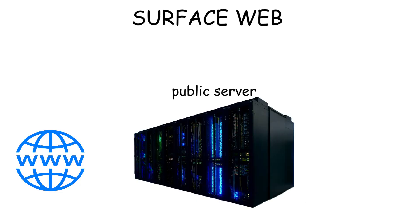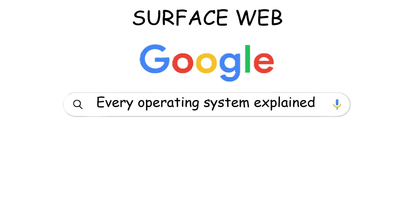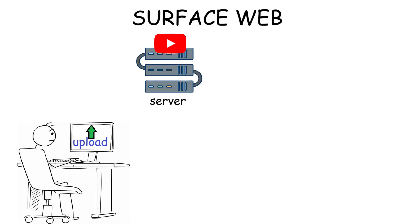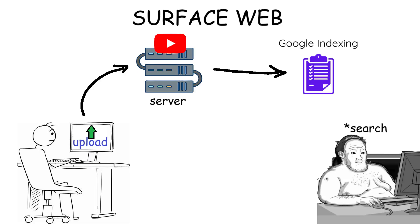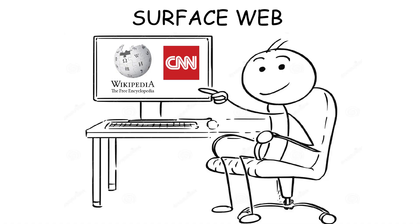This works because web pages are stored on public servers and then indexed by search engine bots. For example, if you search 'every operating system explained' on Google, you might find a video there even if you're not on YouTube. That is possible because the video was stored on YouTube's public server when uploaded, and then indexed by Google. So when anyone searches for it, Google can instantly show the video since it's not restricted by a password — it's meant for the public. The same goes for news and Wikipedia; the public can access them all directly just by searching.